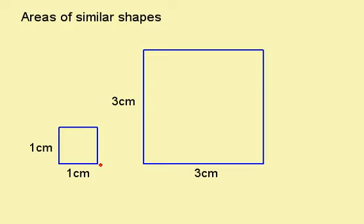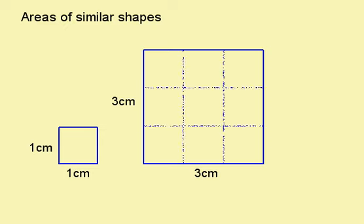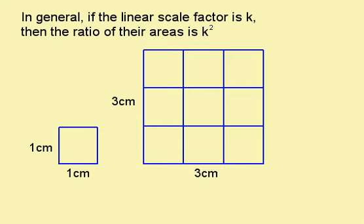Here we have two similar shapes. The scale factor is 3. When I look at the areas of these two shapes, I can see that the area of this one is 1 cm² and the area of this one is 9 cm². In general, we have that if the linear scale factor is k, then the ratio of their areas is k². So in our example, the linear scale factor k was 3, and the ratio of the areas, k², is 9.